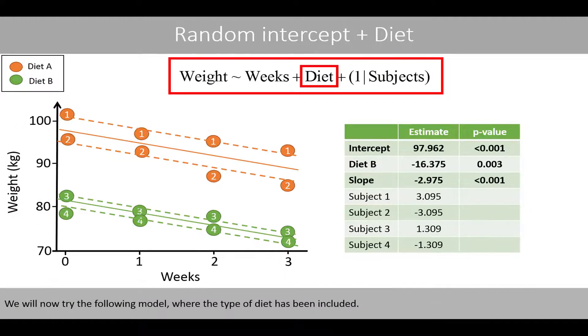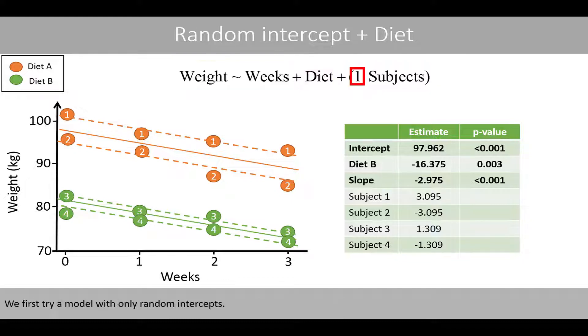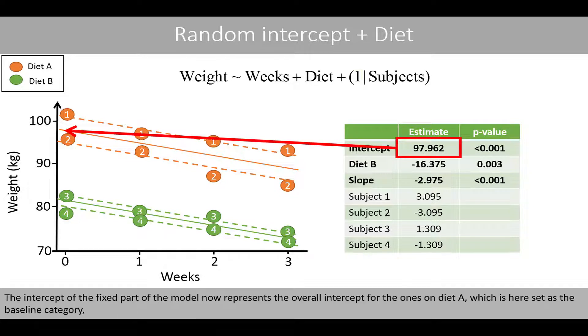We'll now try the following model where the type of diet has been included. We first try a model with only random intercepts. The intercept of the fixed part of the model now represents the overall intercept of the ones on diet A, which is here set as the baseline category.